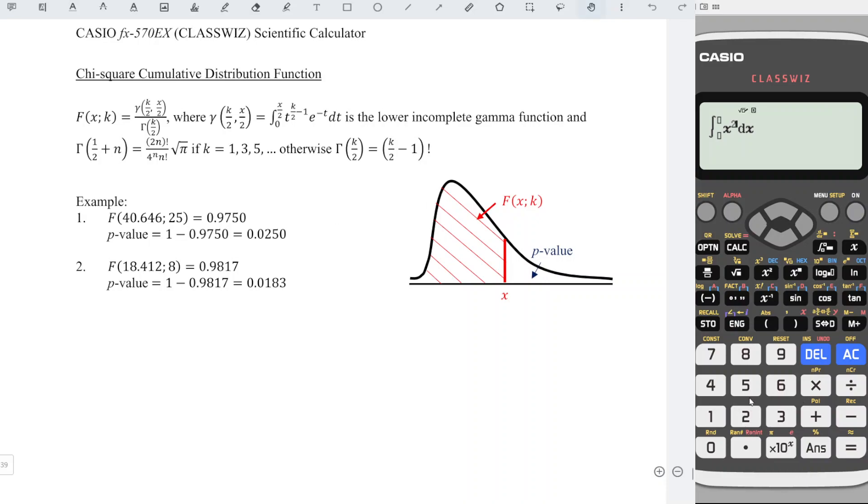So we press 25 over 2 and minus 1, shift log to get e power, and then we have negative x. Right, right to get to the lower limit which is zero.